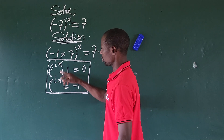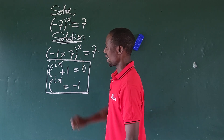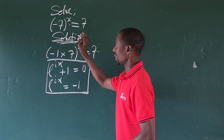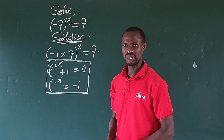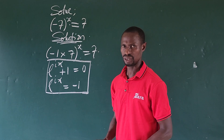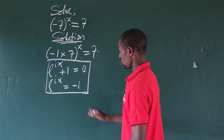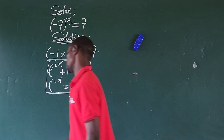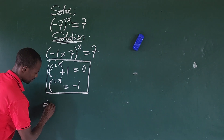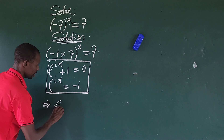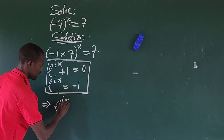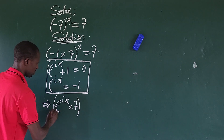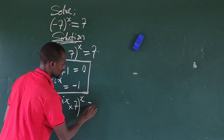If you look at this question you will discover that you cannot get a real solution — there is no real solution, no matter what. So substituting e^(iπ) for minus one, our equation now becomes: e to the power of iπ, times seven, all to the power of x, equals seven.